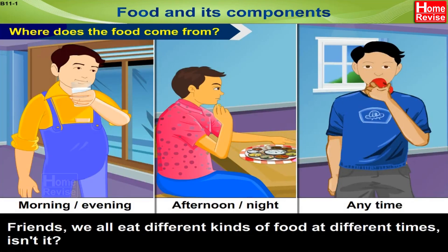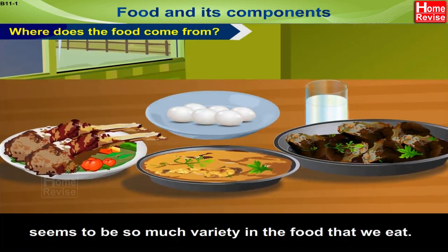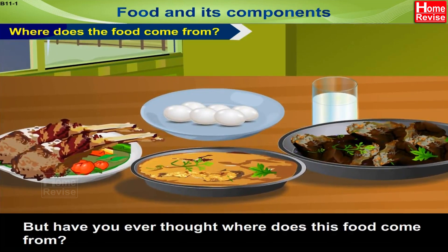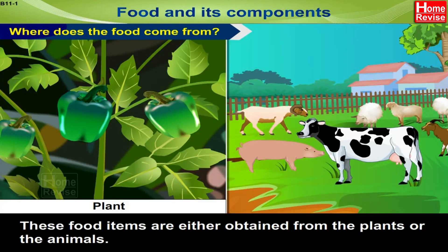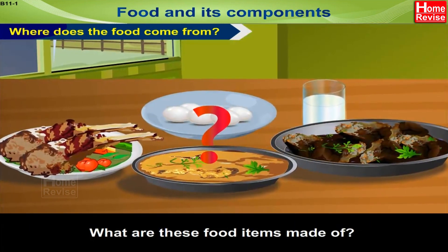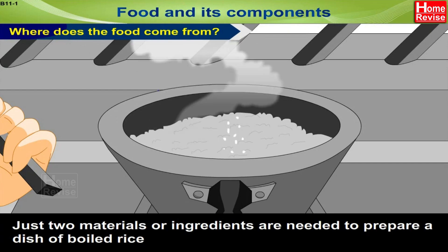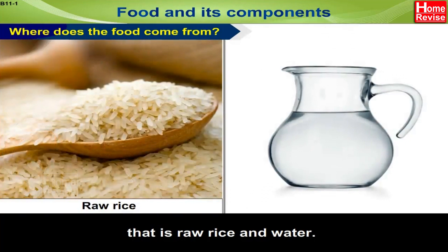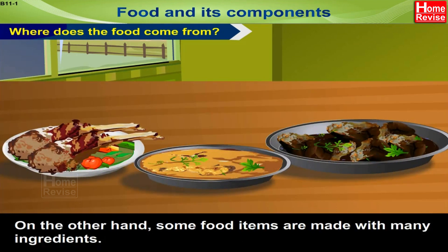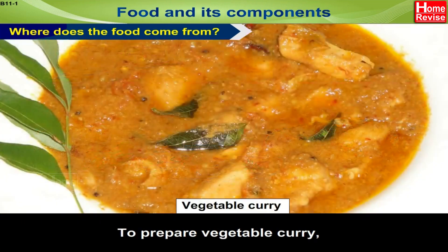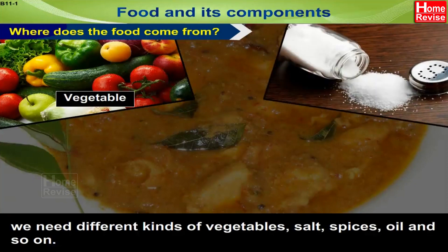Where does the food come from? We all eat different kinds of food at different times. There is such a vast variety that we like. Have you ever thought where does this food come from? These food items are either obtained from plants or animals. Think about rice cooked at home — just two ingredients are needed: raw rice and water. On the other hand, some food items are made with many ingredients, like vegetable curry, which needs different kinds of vegetables, salt, spices, oil, and so on.